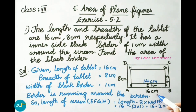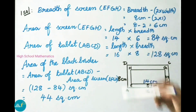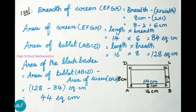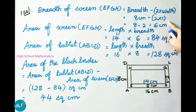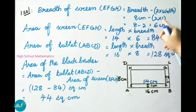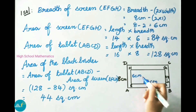Next we find the breadth of the screen, and then the area of the screen and the area of the tablet. Subtracting both will give us the area of the black border. Breadth of screen EFGH equals 8 centimeter minus 2 times width 1 centimeter, which is 8 minus 2, giving us 6 centimeter. Therefore breadth of the screen is 6 centimeter.